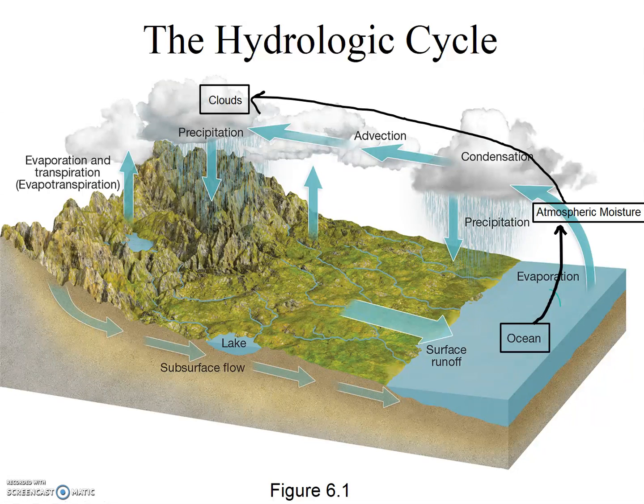Think about what other pools and processes you'll include. Remember that any place that water hangs out, you should label and name as a specific pool, and the processes are the arrows that move water from one pool to another. For this week's assignment, I asked you to try to come up with a model with six pools and eight processes.